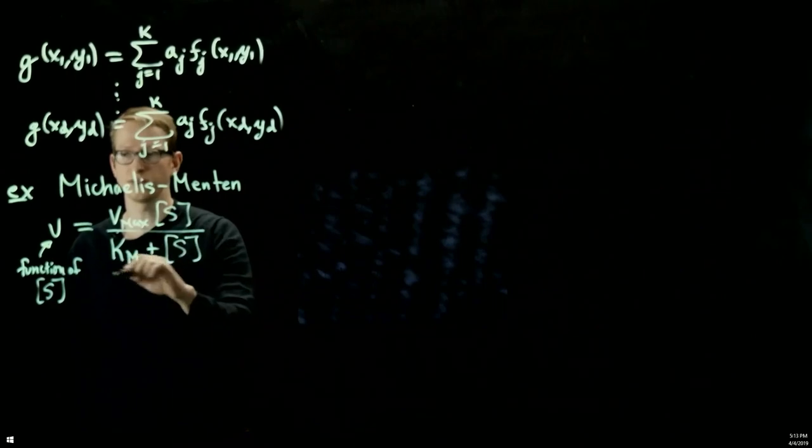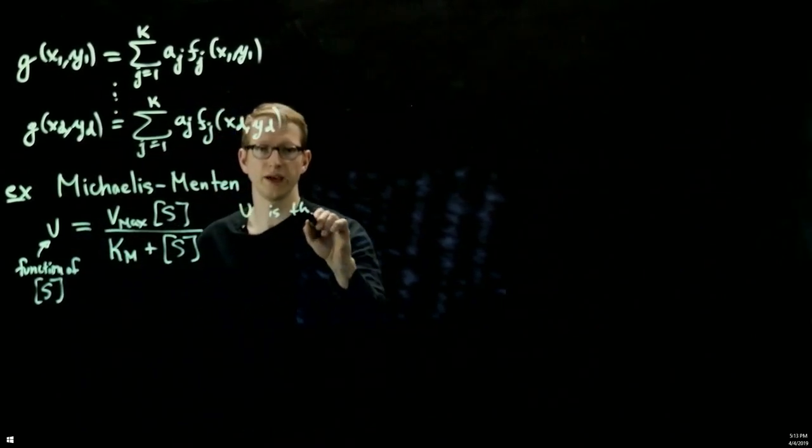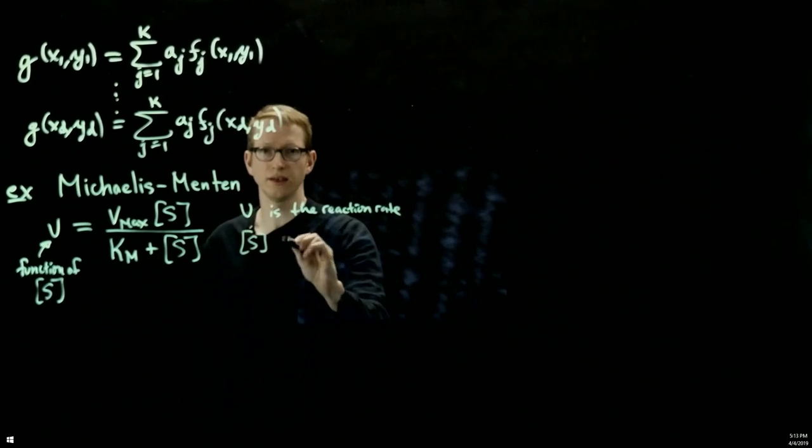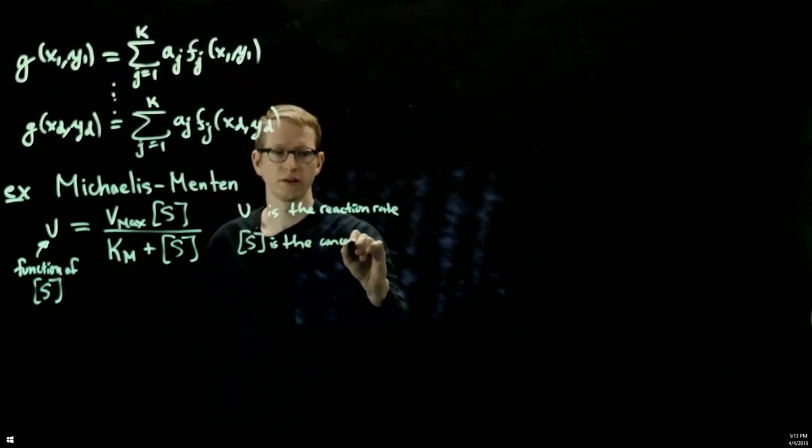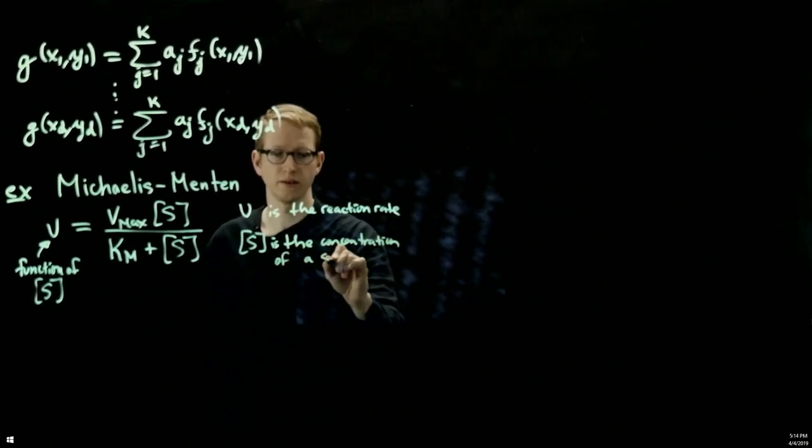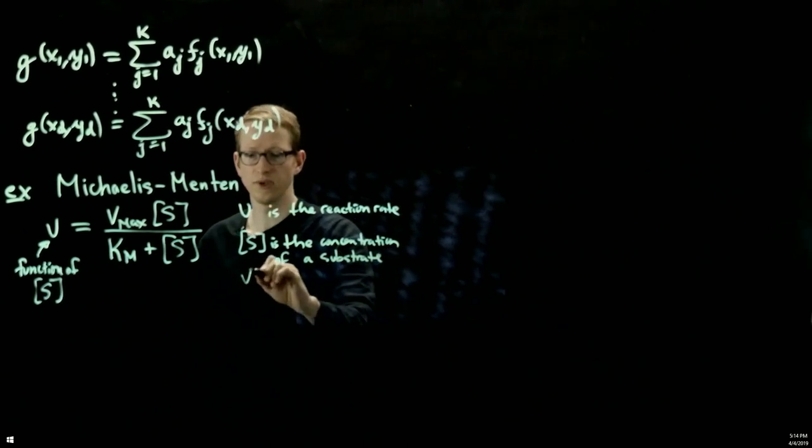And what the symbols mean in this equation are, is that v is the reaction rate, s is the concentration of a substrate, vmax.